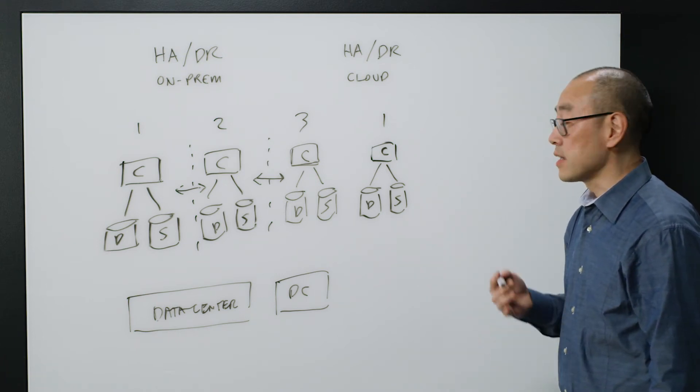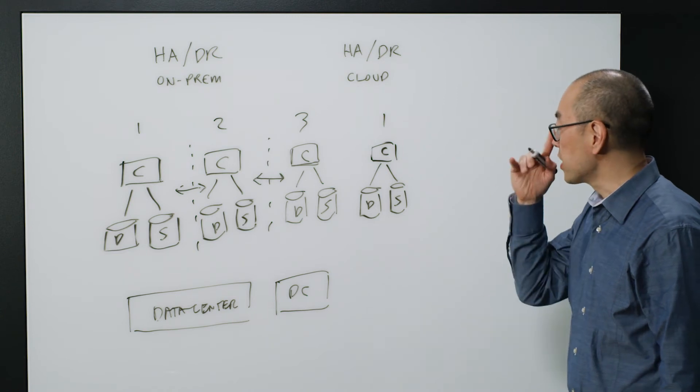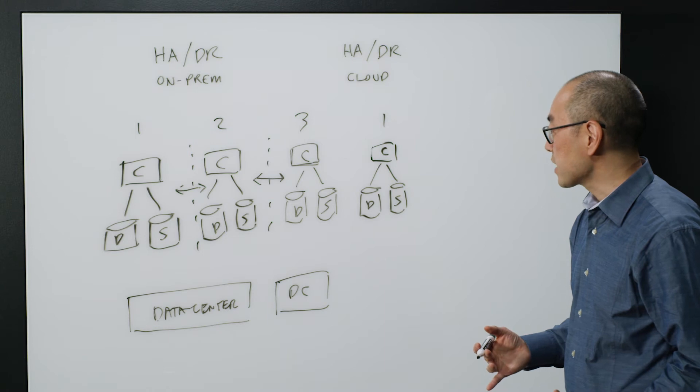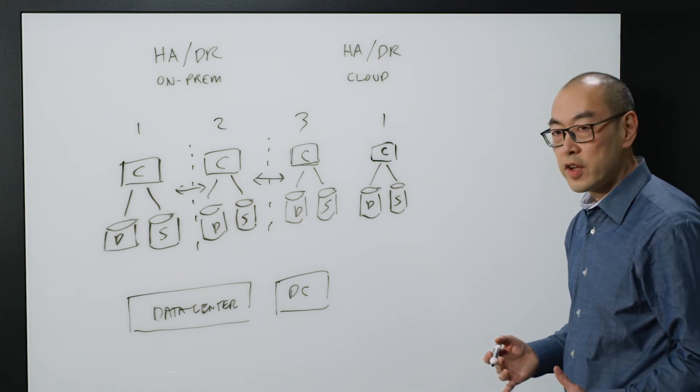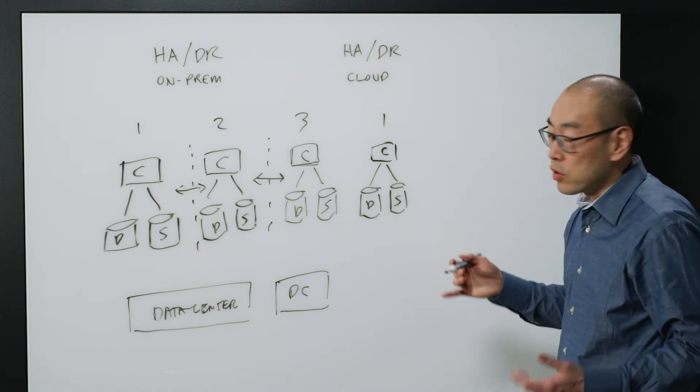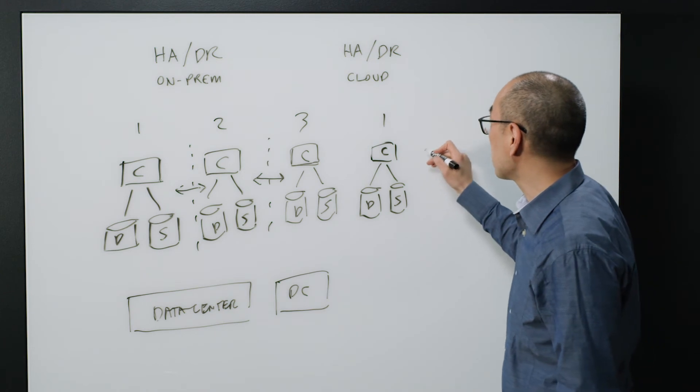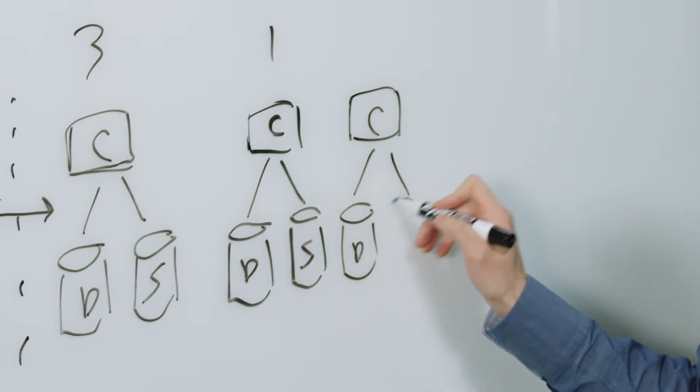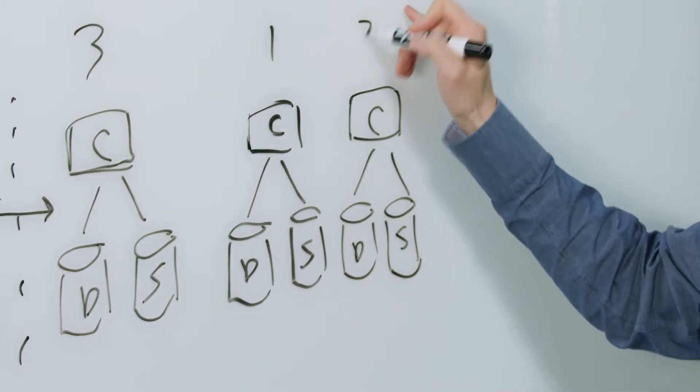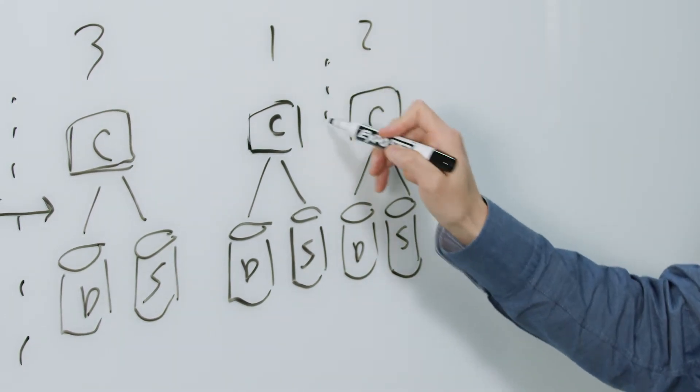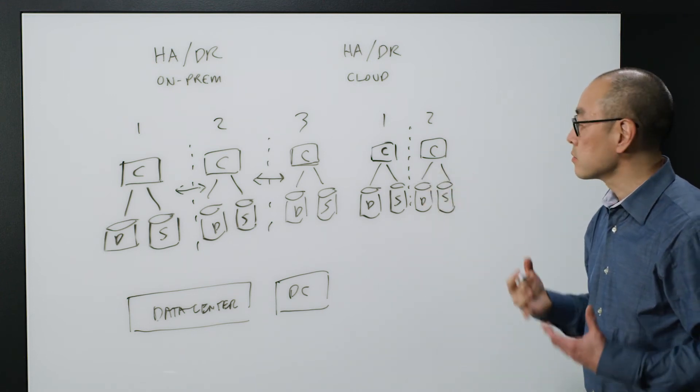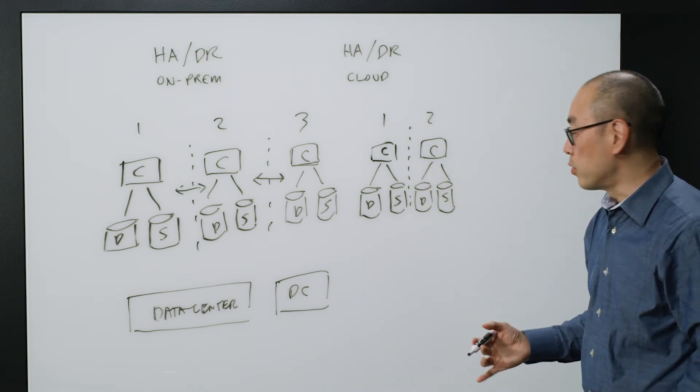You're literally selecting, in most clouds, you're literally selecting the fact that you want additional resiliency. You want it protected from hardware failure. So in Oracle, for example, you can literally just pick fault domains for the various components of your application. And that's it. So you don't have to think about, do I have enough infrastructure? What is the latency between? It's already available for you.